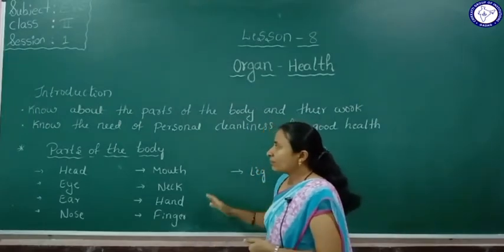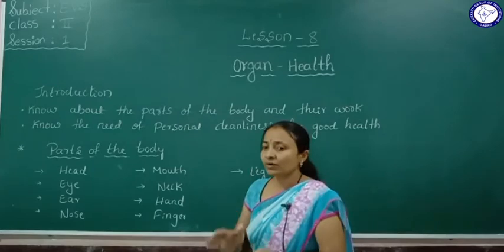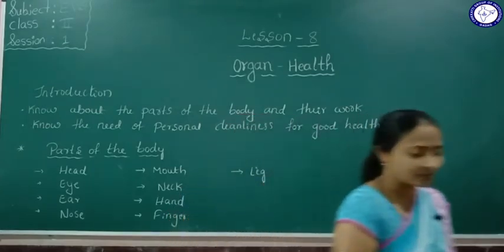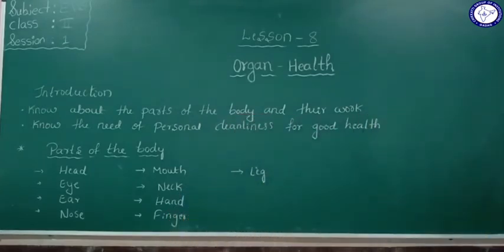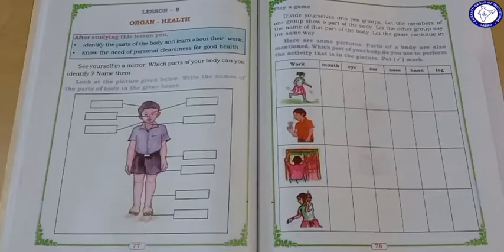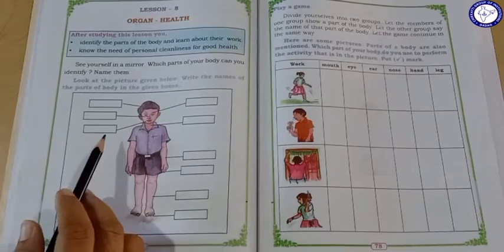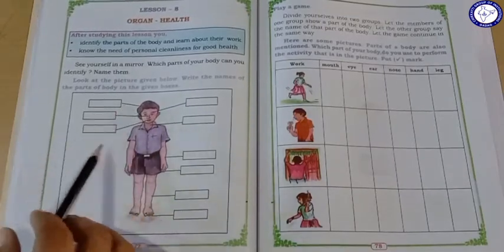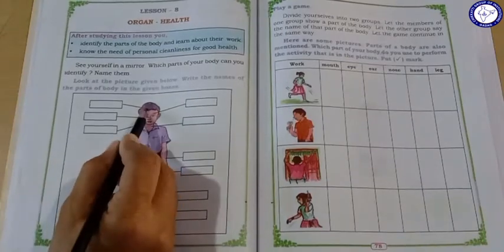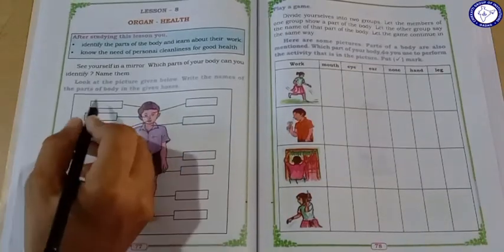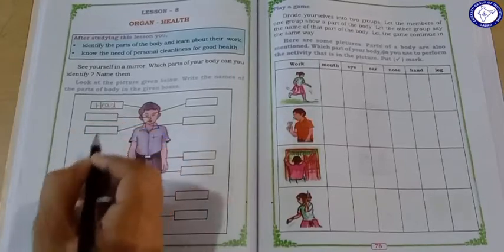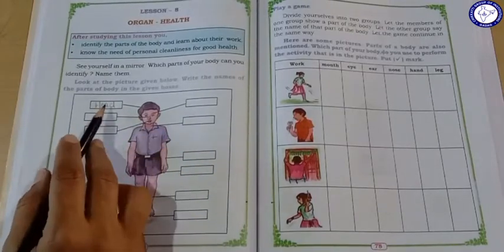These all are the parts of the body and their work. In detail we will see in the textbook. See here students — we can see here the parts of the body. They have given here one boy, and they have given the parts of the body. What is this one called? We can call this head.